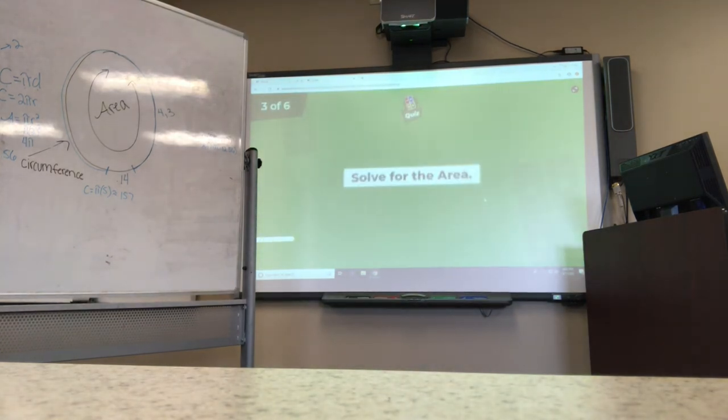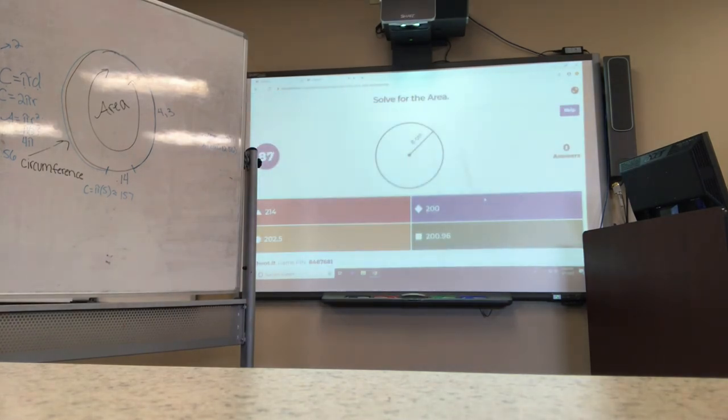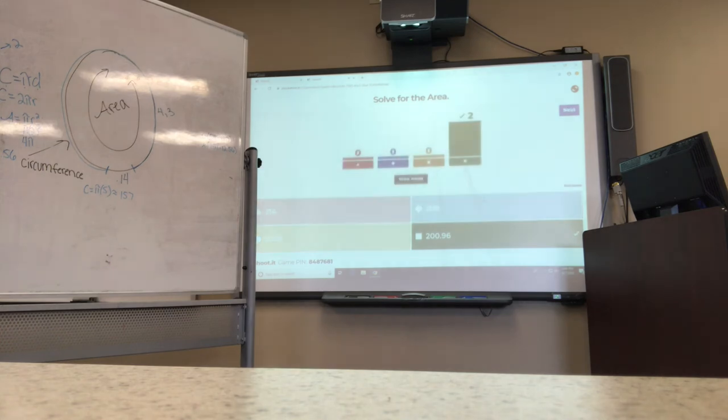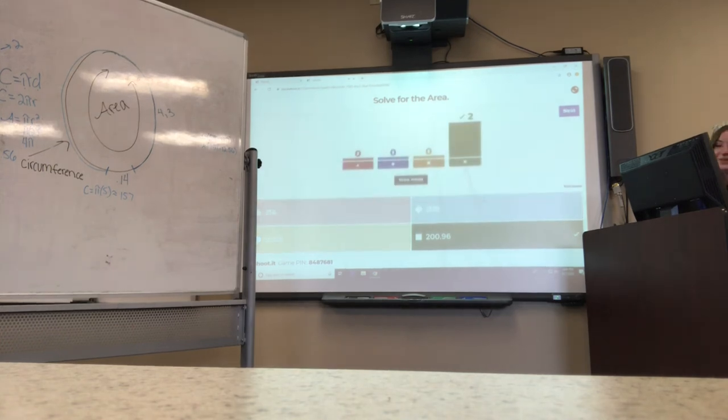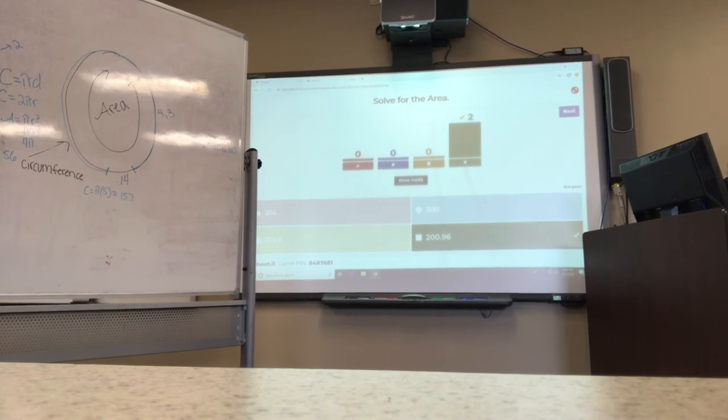Next question: solve for the area. Don't worry, you'll have plenty of time. Remember, area equals pi R squared. Correct. The answer would be 200 times 96. Since 8 was our radius, you would do 8 squared and multiply that by 3.14, or pi.